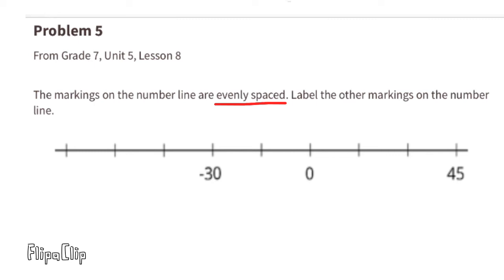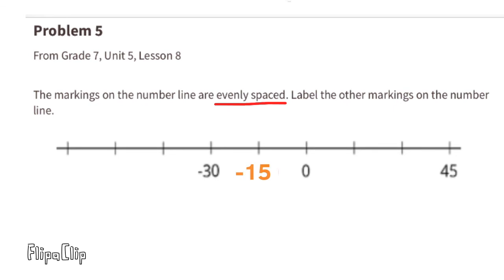Problem number 5 from 7th grade Unit 5 Lesson 8: the markings on the number line are evenly spaced — label the other markings. There are two equal spaces between 0 and negative 30, so each space is worth 15. Negative 15 is to the left of 0, and positive 15 is to the right. Counting by 15s to the left from 0: negative 15, negative 30, negative 45, negative 60, negative 75.